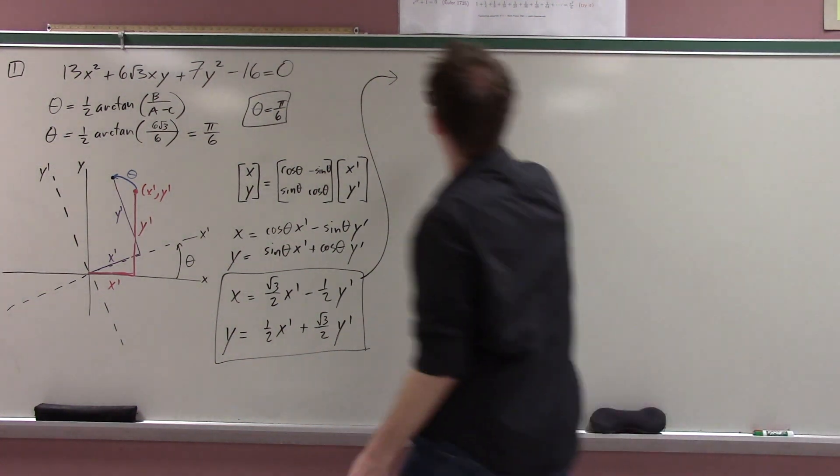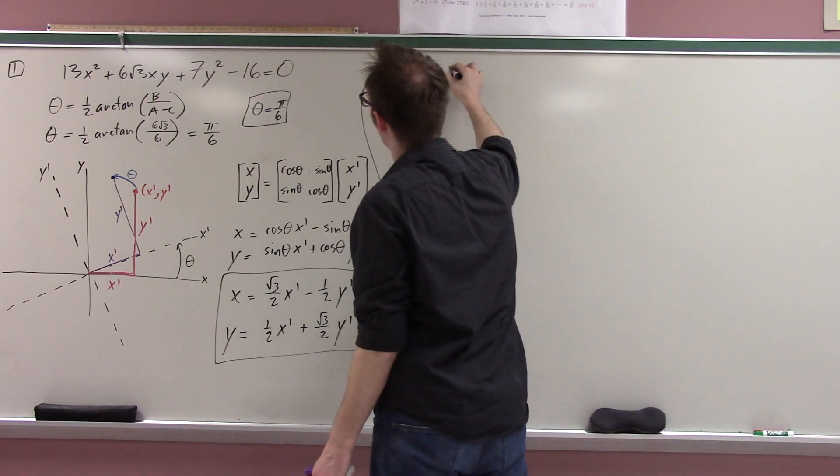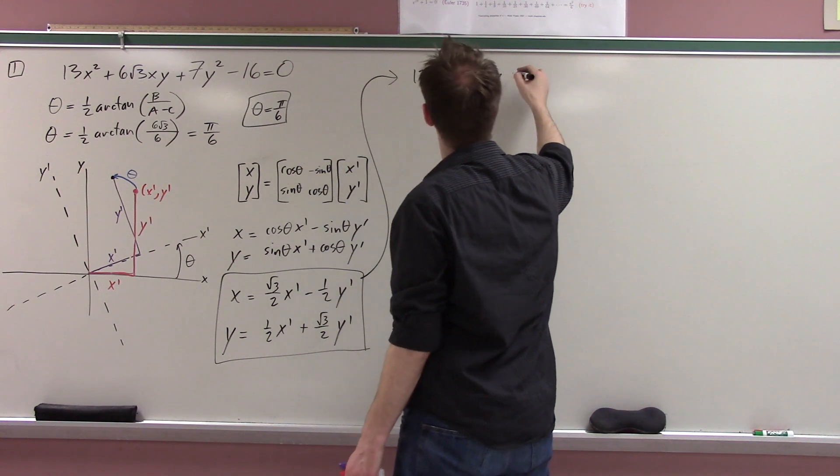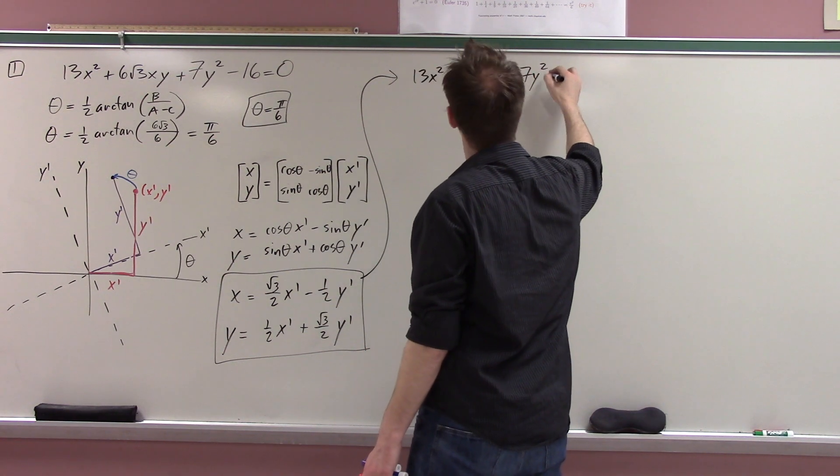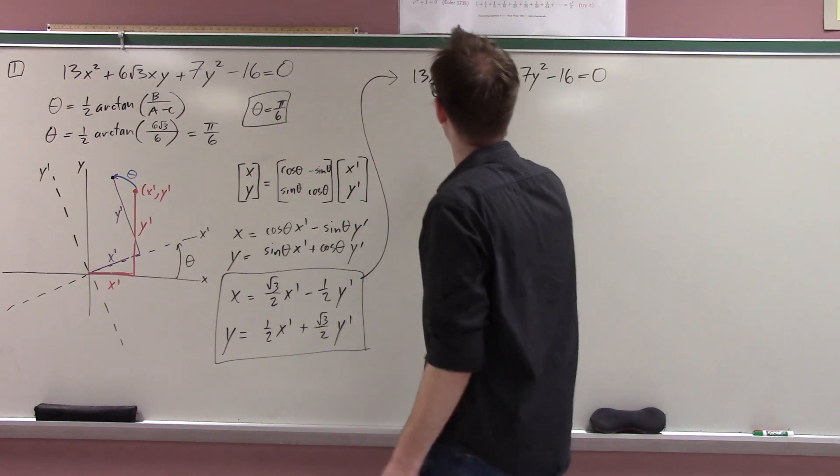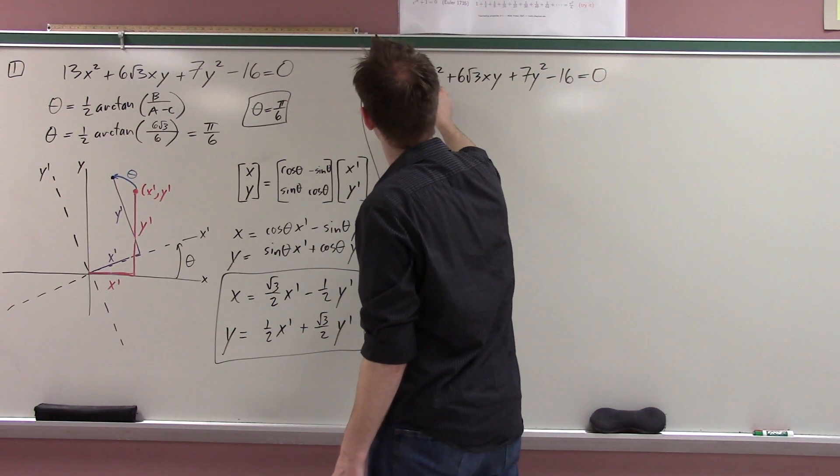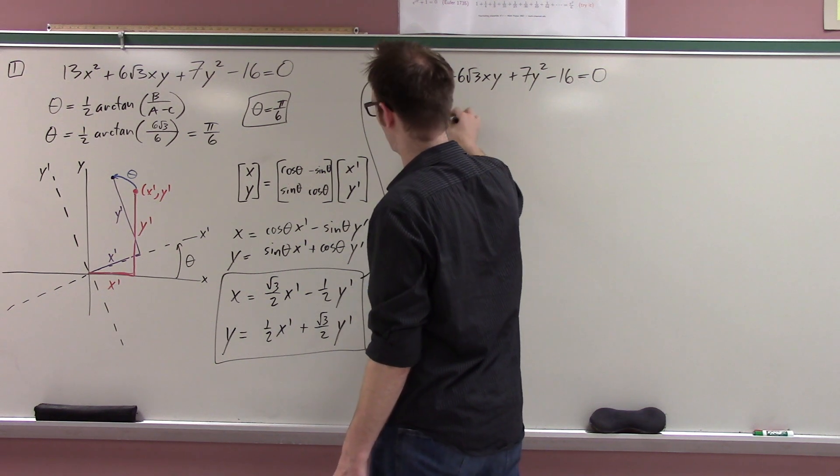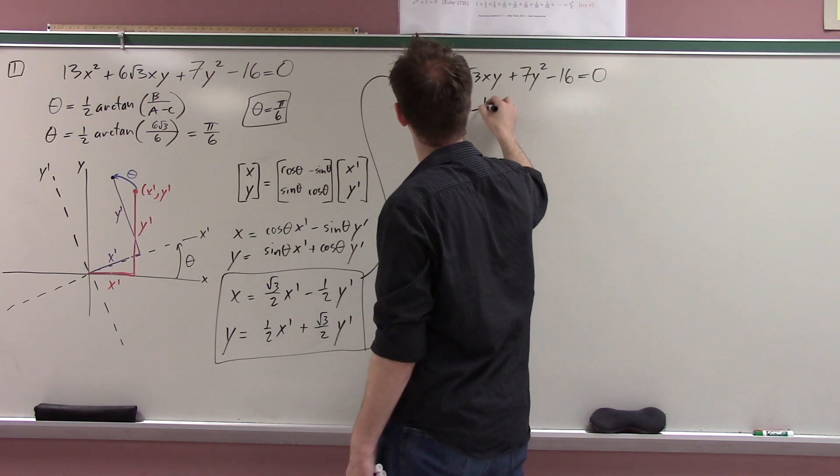So I take this old, the old conic, 13x squared plus 6 root 3 xy plus 7y squared minus 16 equals 0, and I just plug this crap in. So you can just do this right now. You don't even need me for this. Oh, we should put the music back on now.